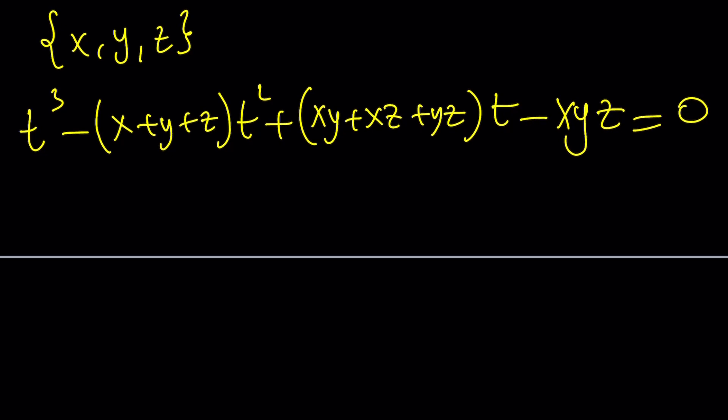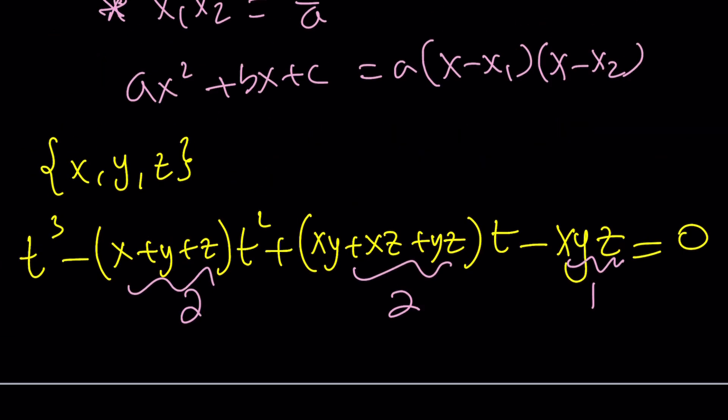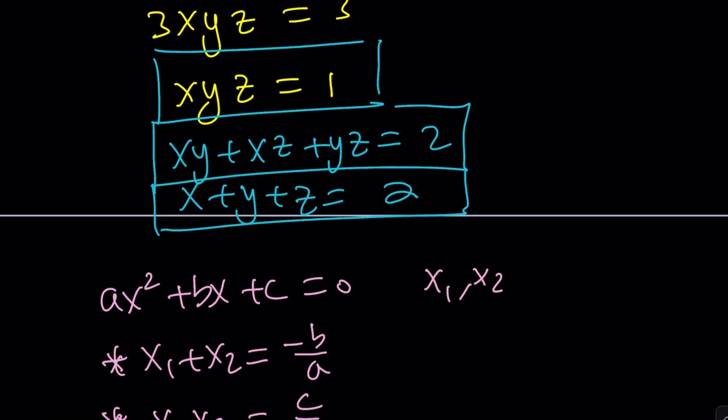Let's go ahead and replace these with numbers, because we do know x + y + z is equal to what? 2, right? This was also 2, and this was equal to 1. We just found it, right? Remember with the cubics, we did find xyz. Great.